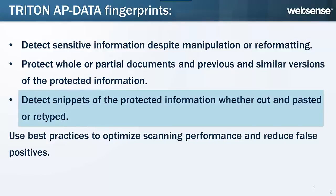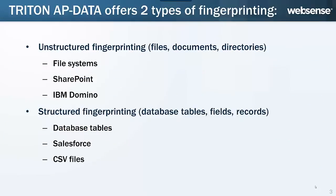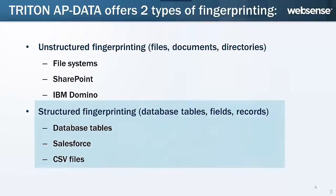To prevent unintended matches and optimize fingerprint scans, you can follow the industry best practices described in this video. There are two types of fingerprinting. File or document fingerprinting lets you fingerprint unstructured documents or directories, including those in Microsoft SharePoint and IBM Domino. Database fingerprinting lets you fingerprint structured records retrieved directly from your database table, Salesforce table, or CSV file. This video focuses on structured database fingerprinting.